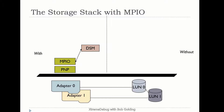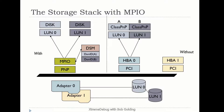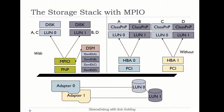With MPIO and the aid of the DSM, when the disk is enumerated, you'll get one disk. MPIO will present A and C together as one disk, and B and D together as one disk. You can see side by side: without MPIO, all four LUNs were presented to the system. With MPIO, A and C are presented to MPIO and boiled down to one device — same thing with LUN one. The DSM and MPIO work in concert during enumeration.